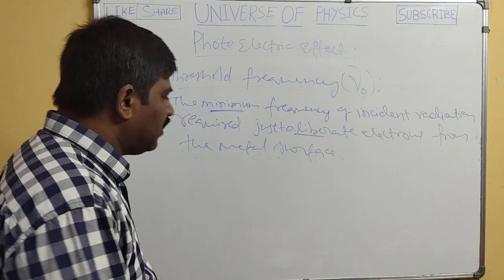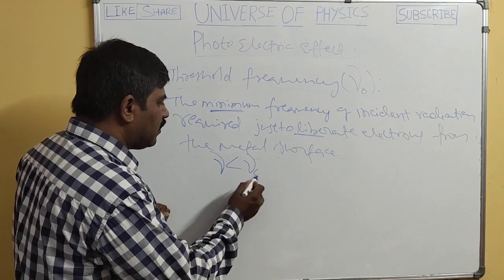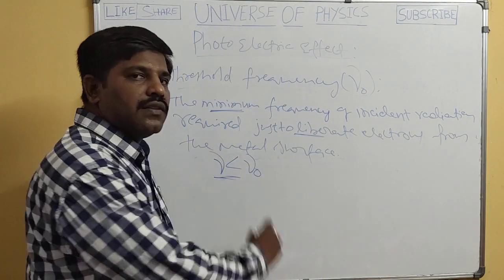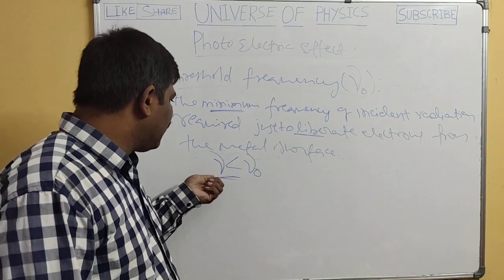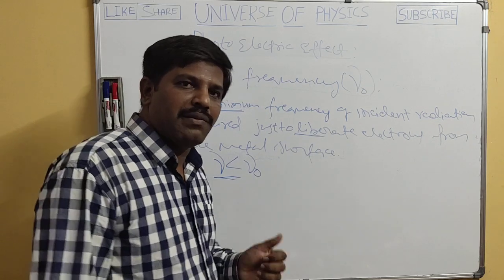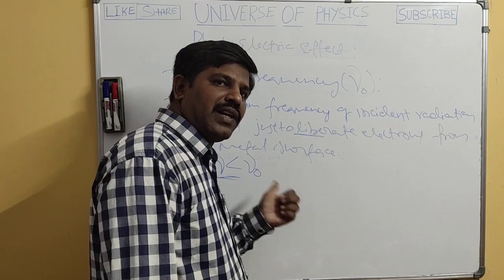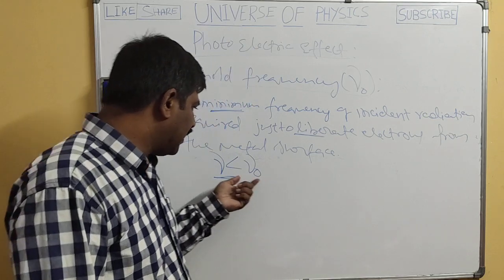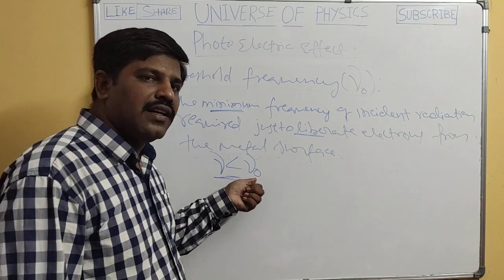Suppose the incident radiation has frequency ν which is less than ν₀. Is it possible to get electrons from the metal surface in this case? No. Because the incident radiation frequency is lesser than the threshold frequency, and threshold frequency itself is the minimum frequency required to get electrons from that particular metal surface. So we cannot get any electrons if the incident radiation frequency is less than threshold frequency.